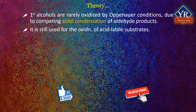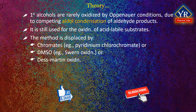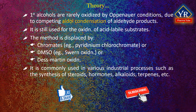The Oppenauer oxidation is still used for the oxidation of acid labile substrates. The method has been largely displaced by oxidation methods based on chromates — that is, pyridinium dichlorochromate — or dimethyl sulfoxide-based methods such as Swern oxidation or Dess-Martin oxidation, due to the use of relatively mild and non-toxic reagents. The Oppenauer oxidation is commonly used in various industrial processes such as the synthesis of steroids, hormones, alkaloids, terpenes, etc.